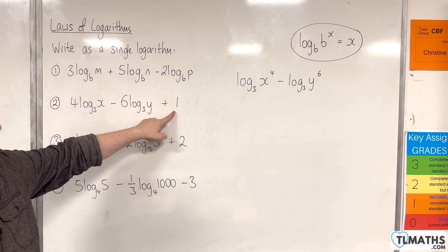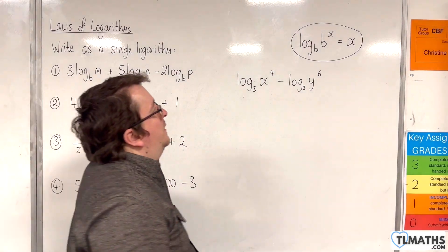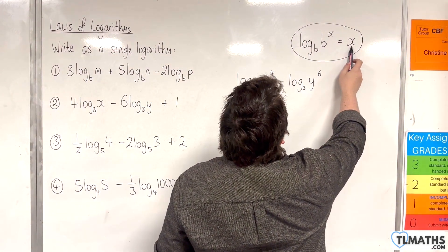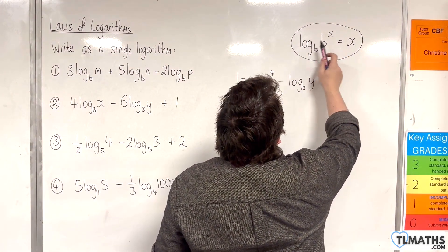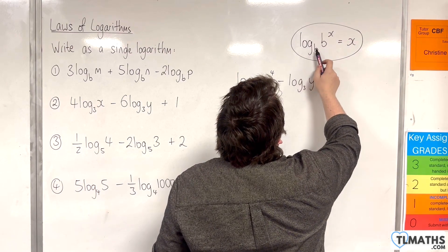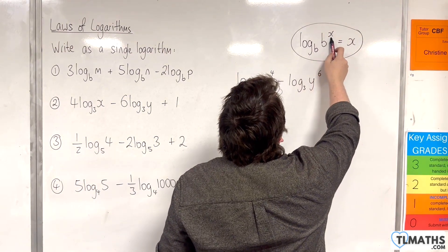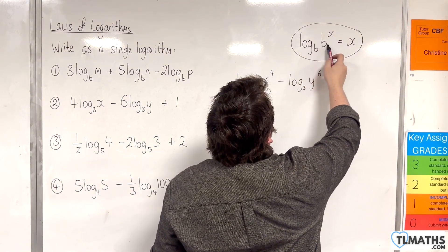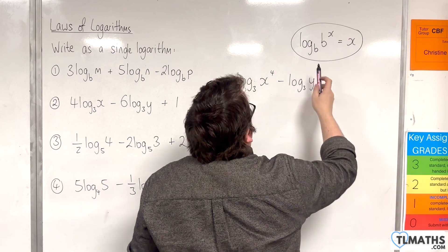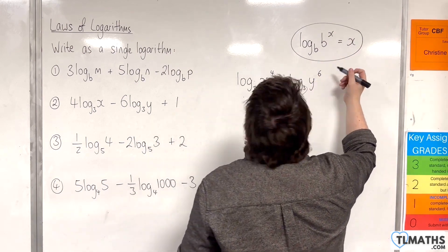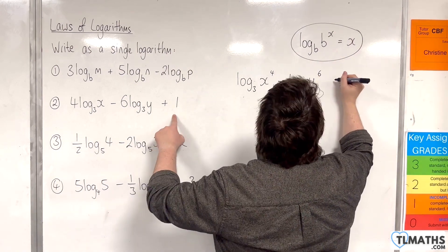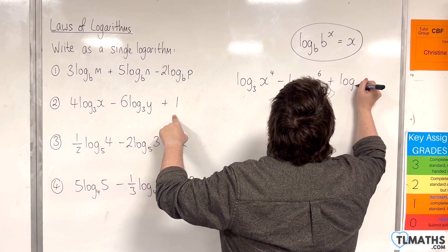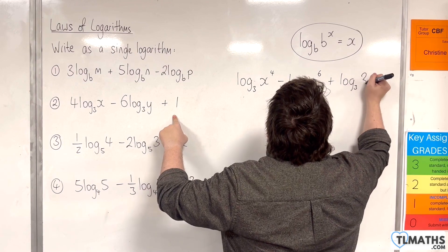Now, the 1 — if x is 1, then it can be replaced with log base b of b to the 1, which is log base b of b. The base here is 3, so 1 is the same as log base 3 of 3.